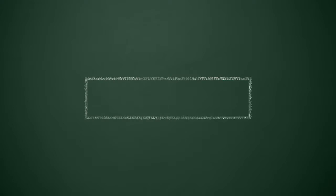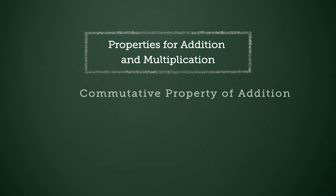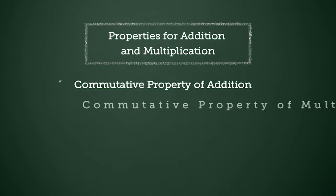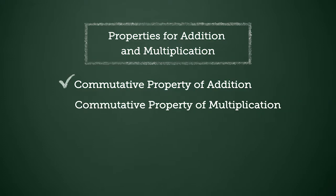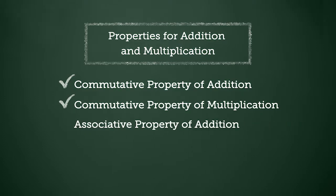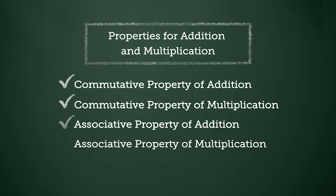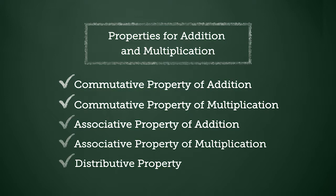The basic properties used for addition and multiplication include the commutative property of addition, the commutative property of multiplication, the associative property of addition, the associative property of multiplication, and the distributive property. Using these properties will allow you to simplify complex number expressions that use addition and multiplication.